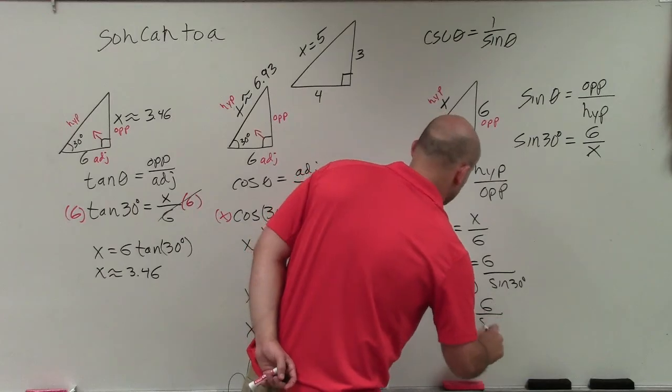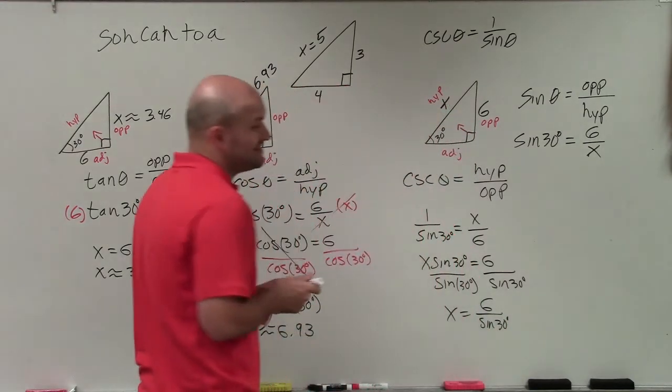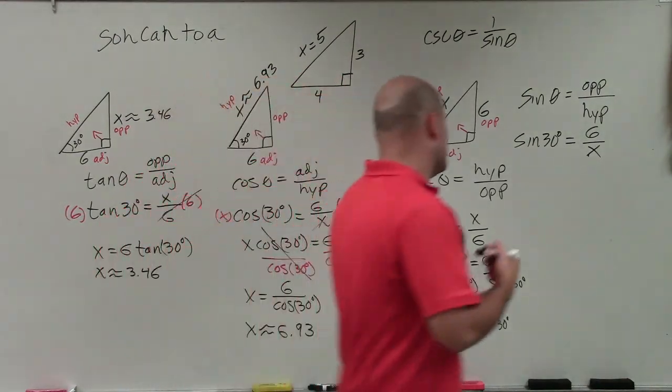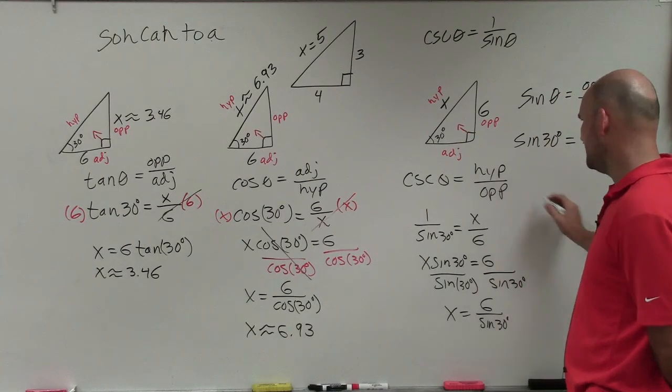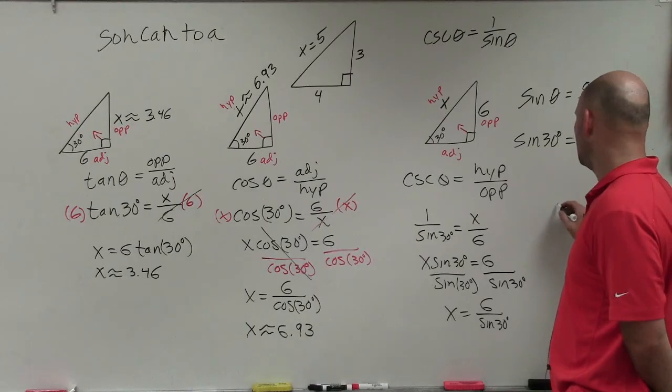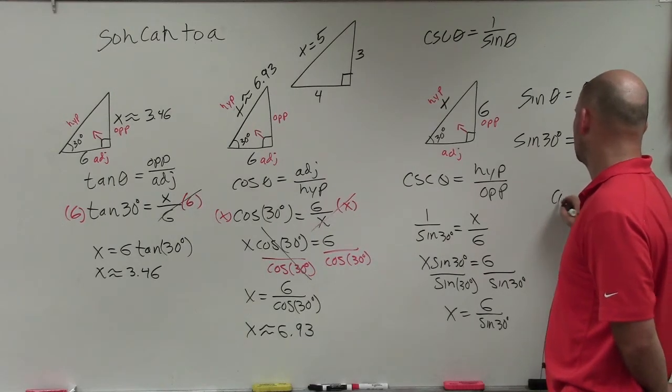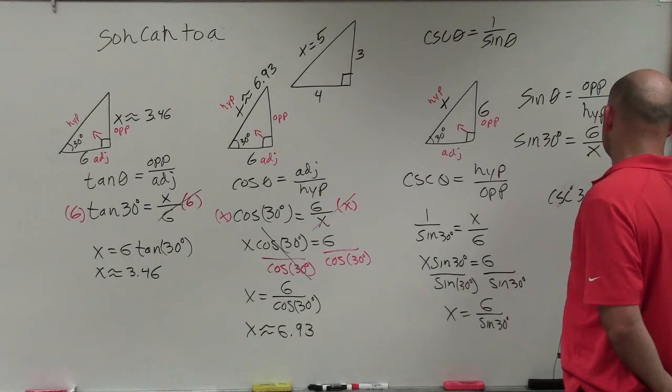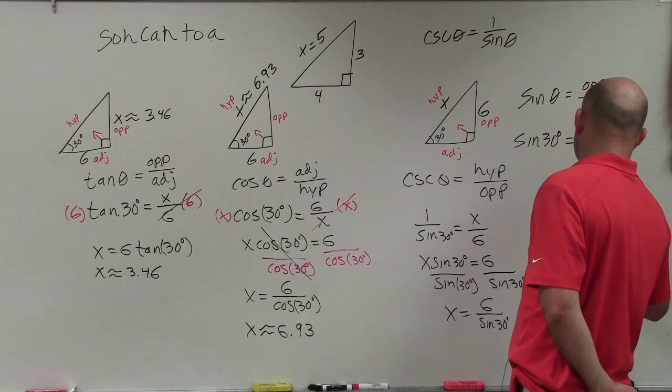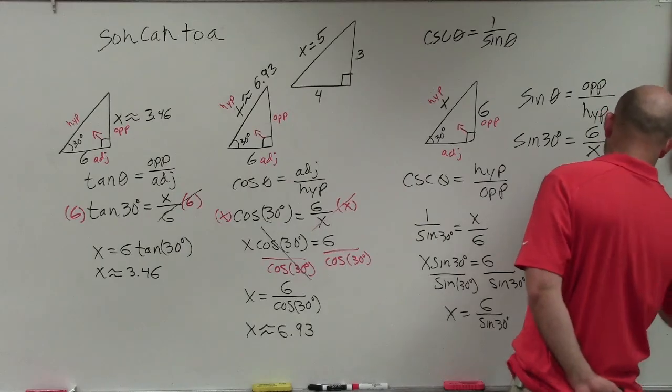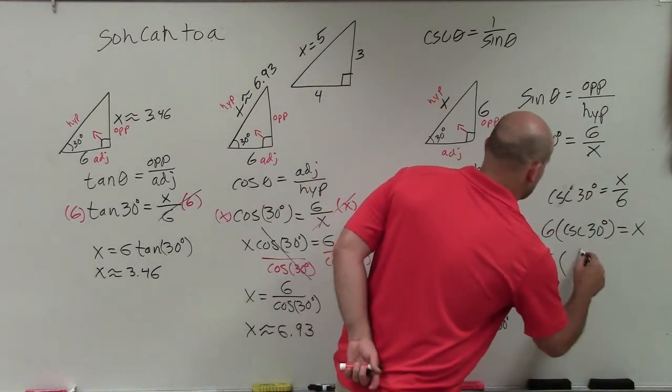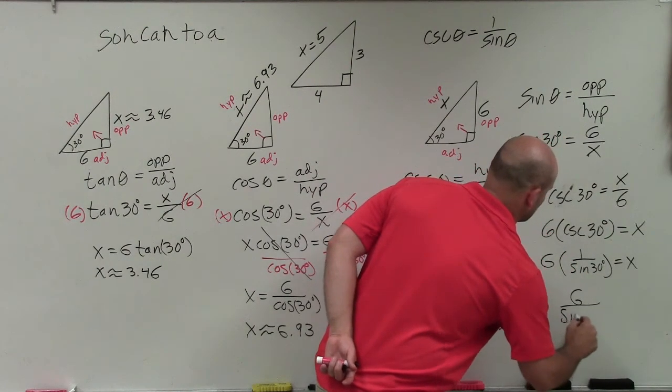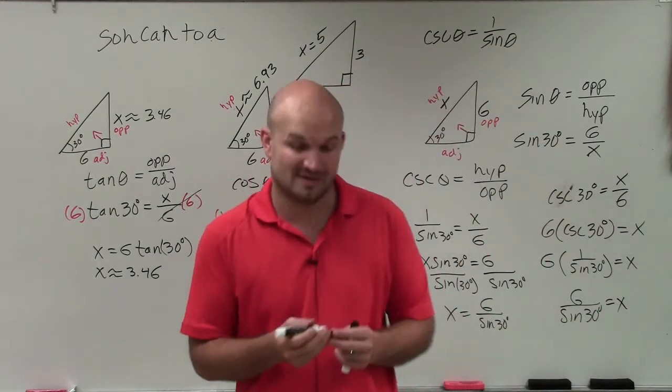If you notice, it's the exact same thinking, the exact same process, but it's just a different way of completing the problem. Even if you left it as cosecant of 30 degrees equals x over 6, that means 6 times cosecant of 30 degrees equals x. Just remember that cosecant is 1 over sine. So 6 times 1 over the sine of 30 degrees equals x. Therefore, that's 6 over the sine of 30 degrees equals x.